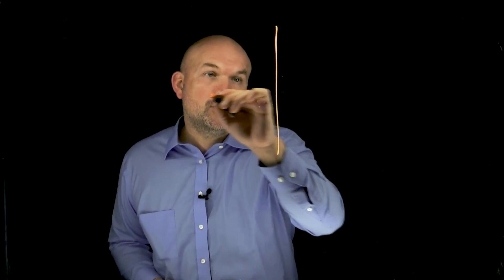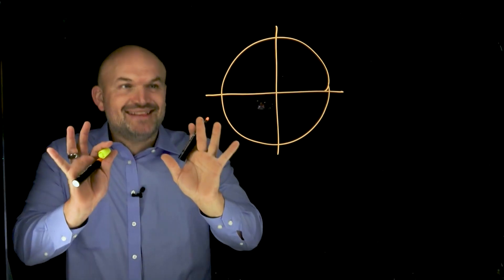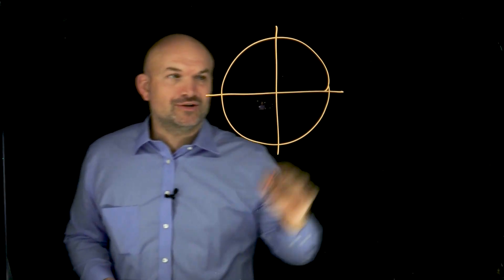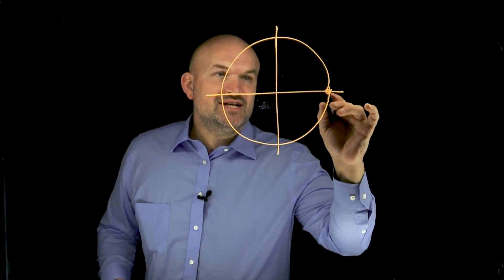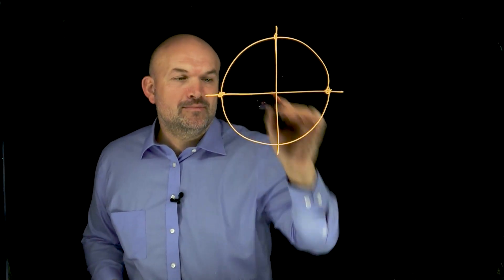If you want to be able to graph sine, cosine, and tangent fast, this is all I want you to focus on. This is all I want you to know. And it's actually really, really simple. It is just the unit circle — not the whole unit circle, just these four points.